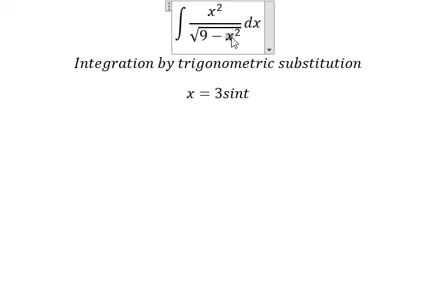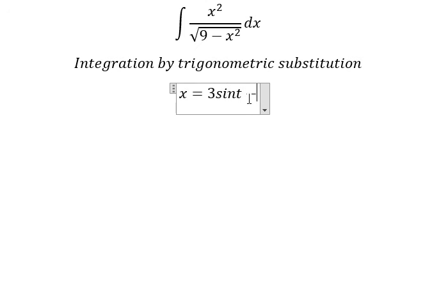We get 9 sine² t. Number 9, we can do factorization: 1 minus sine² t. We change to cos² t and later we simplify by the square root. And dx, we have 3 cos t dt.